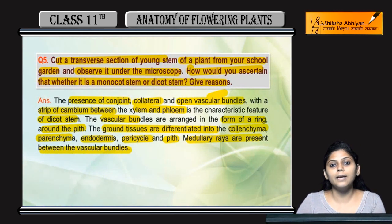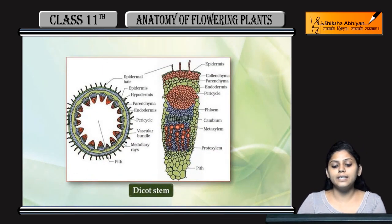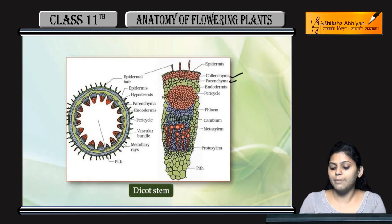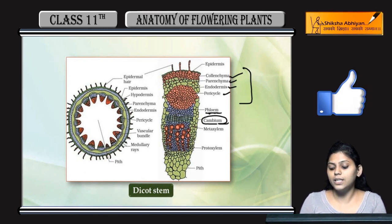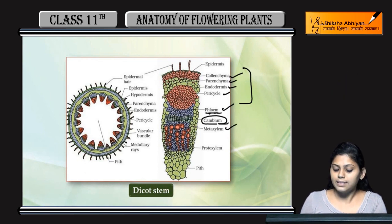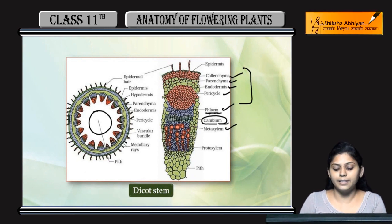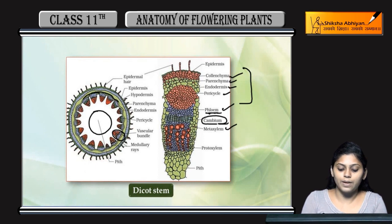You can see here, in the dicot stem there is collenchyma, parenchyma, endodermis, pericycle — all are properly differentiated. Phloem is also properly arranged. Cambium is present between phloem and xylem. Pith is at the center. Xylem and phloem are visible, and medullary rays are present between the vascular bundles.